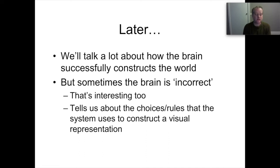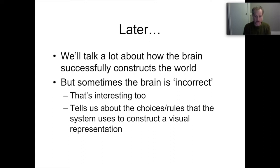Later in the module we talk about how the brain actually constructs the world — picking apart aspects like attention, motion, and color, and thinking about how the brain uses sensory information to construct representations of visual features. But sometimes the brain isn't correct. When the brain is wrong, that's informative: if we can characterize the changes made to a visual stimulus and know what that change means for how perceivers see the image, that tells us something about how the visual system works — the rules and the value the perceptual system places on particular visual features.